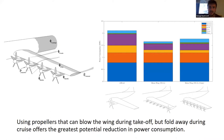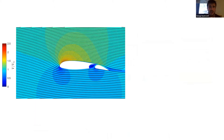At cruise, analysis shows it's better to fold away most of the propellers — that actually makes the aircraft slightly more efficient. The bar chart shows the original aircraft versus distributed systems with and without folding propellers, and the technology to do this already exists. So it is a feasible concept.